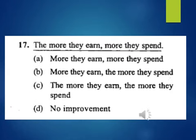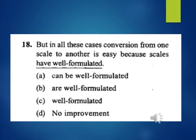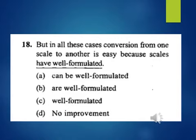Question 17: The more they earn, more they spend. A, more they earn, more they spend; B, more they earn, the more they spend; C, the more they earn, the more they spend; D, no improvement. Question 18: Conversion from one scale to another is easy because scales have well formulated. 'Have well formulated' is underlined. A, can be well formulated; B, are well formulated; C, well formulated; D, no improvement.